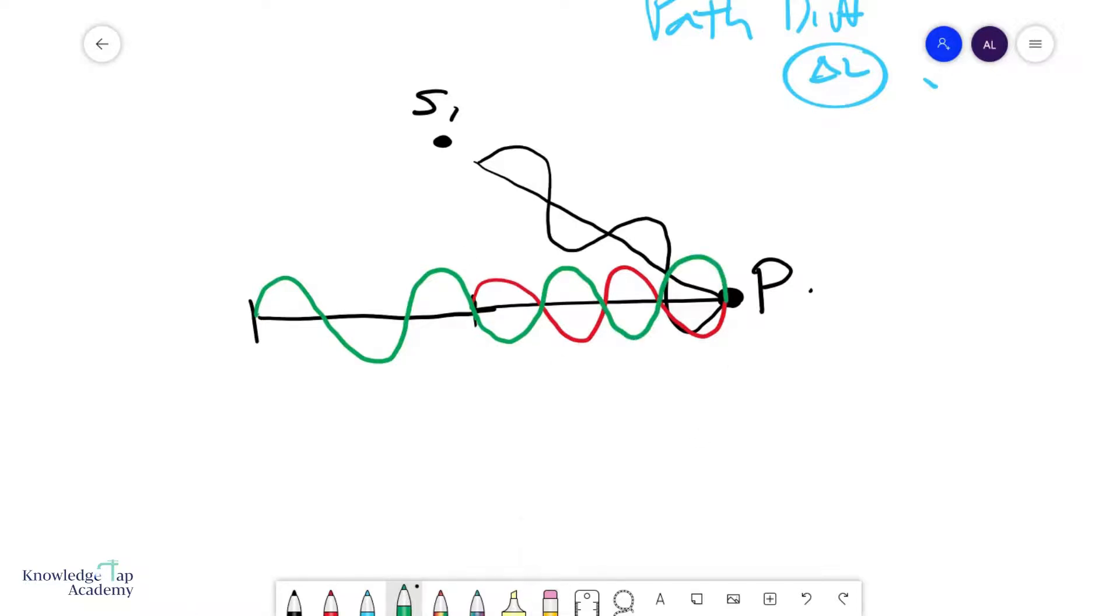So basically, let me write this down, every, you can think of it as every λ of path difference introduced, okay, this will give me a phase difference of 2π radians.